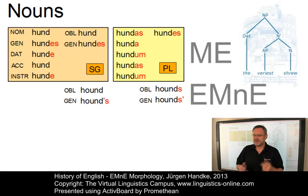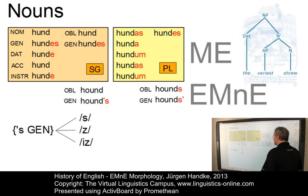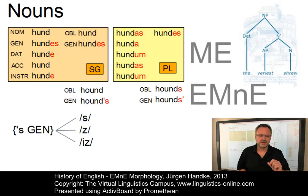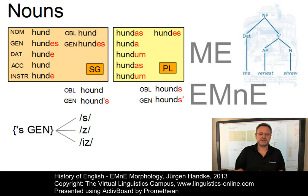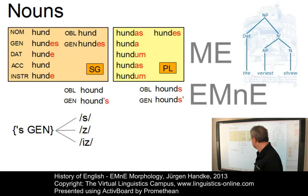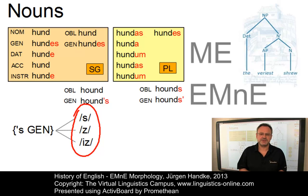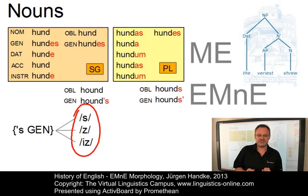By early modern English, the s-genitive, as you can see here, for both singular and plural nouns was almost standard. However, there are interesting differences between the use in early modern English and present-day English. In many cases, the phonological representation of the genitive — that is, these three variants — was misinterpreted as a contraction of the possessive adjective his and the preceding noun.